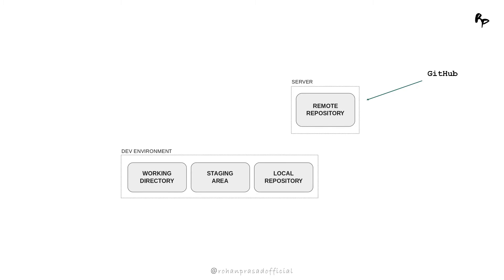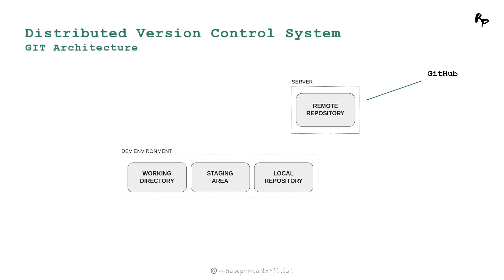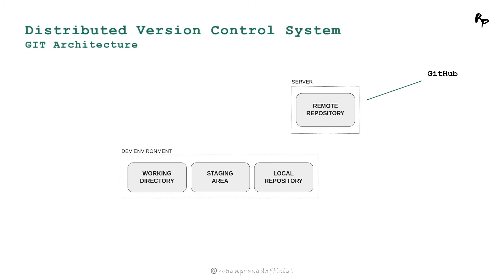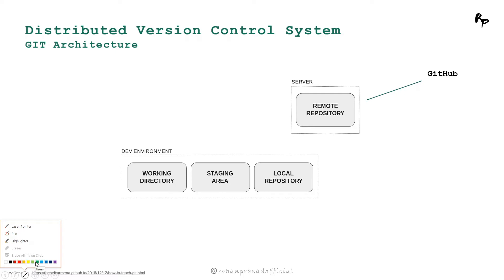So this is the architecture of the distributed version control system that git follows. Basically, GitHub is a remote server where our git services are hosted. As you can see, git takes up this place where the server is noted.